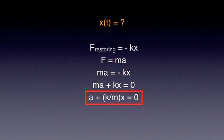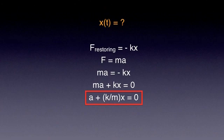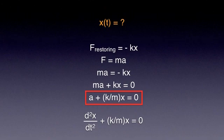We want to determine what function of time x(t) satisfies this equation. For those familiar with differential calculus, the acceleration a is the second derivative of displacement x, and thus the equation a plus k/m · x equals zero turns into a differential equation: the second derivative of x plus k/m · x equals zero. From here the solution x(t) can be found — the equation of motion for this harmonic oscillator.